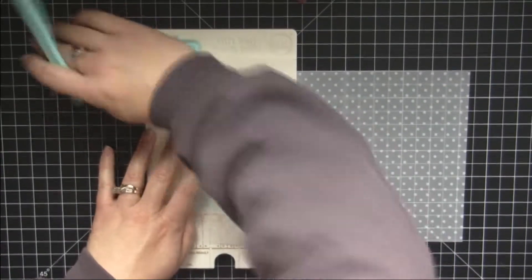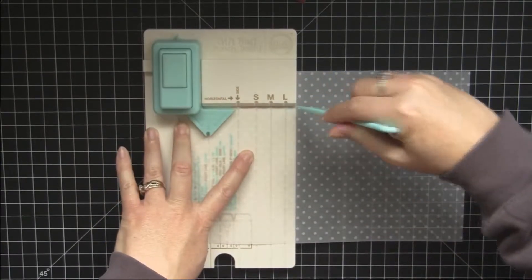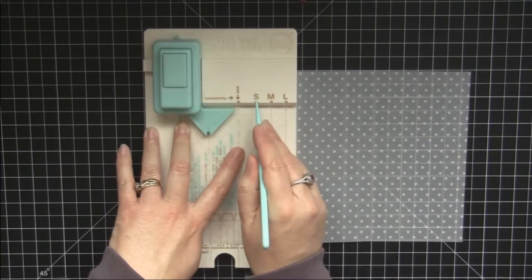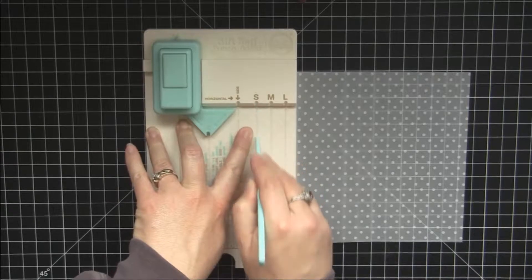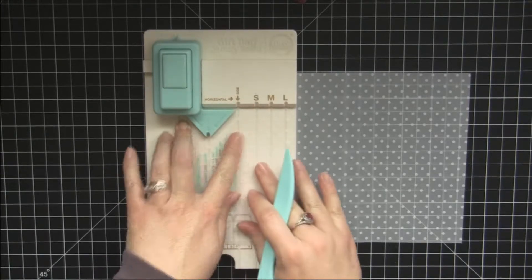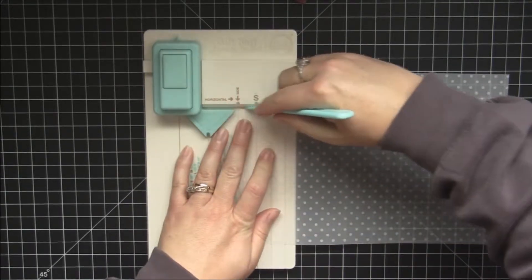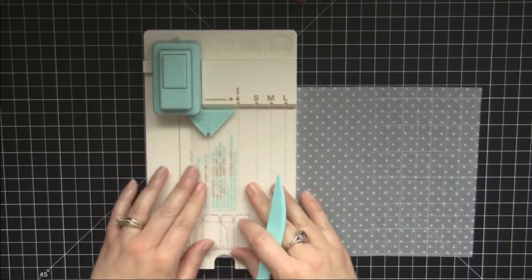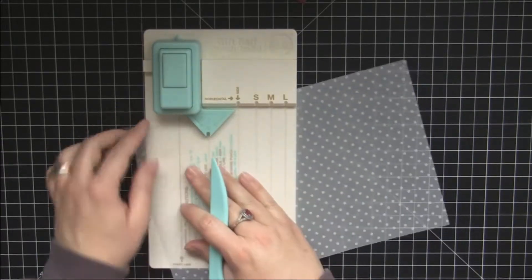So we're going to punch and score along all the lines. We're making a small bag today so I'm going to score along the small line. And it does miss the first one because it's in the punch so I just pull it out and do that.